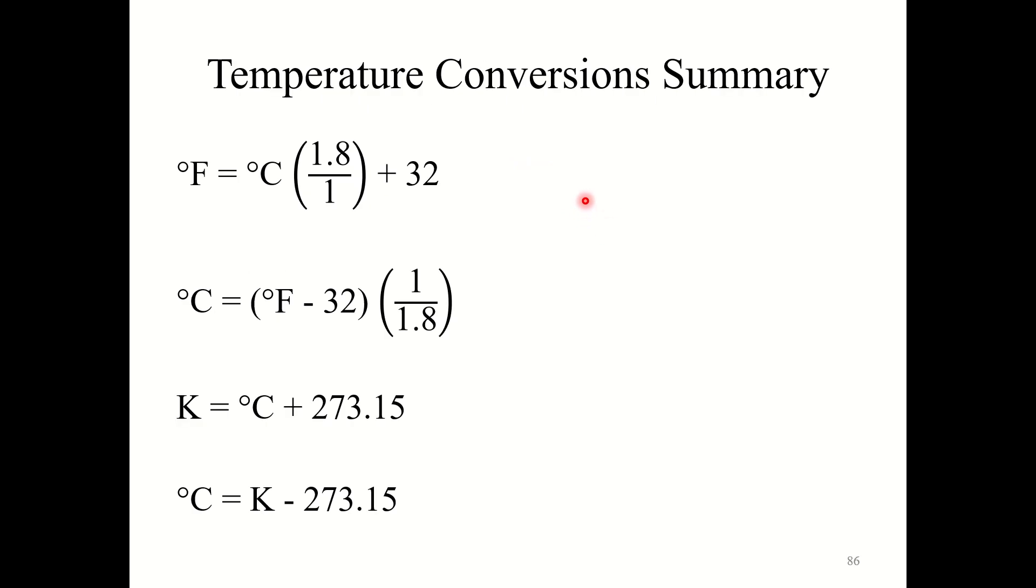Alright, so here is a brief temperature conversion summary. So going from Celsius to Fahrenheit, you would use this conversion. Doing the reverse, going from Fahrenheit to Celsius, use this conversion. But again, you will very rarely, if ever, see these in this course besides possibly the first unit. What you definitely want to know, again, these will be on the reference sheet, but it is very helpful to know these and to memorize these. Going from Celsius to Kelvin, you add 273.15. Going from Kelvin to Celsius, you subtract 273.15.